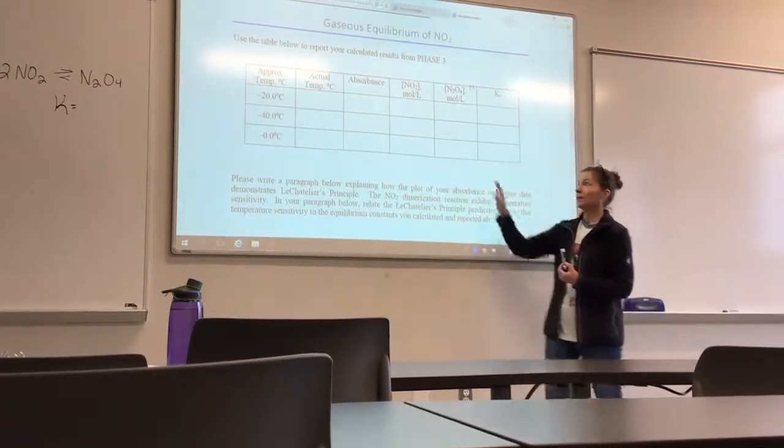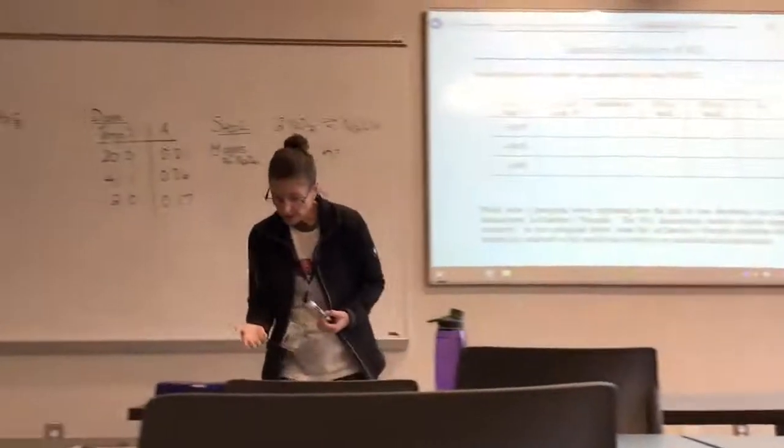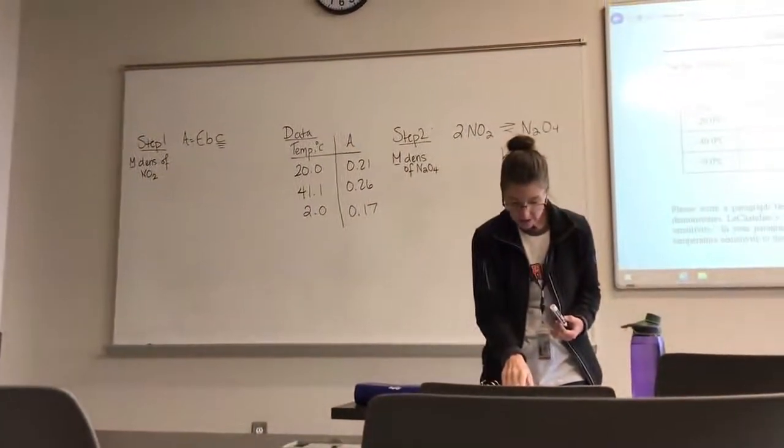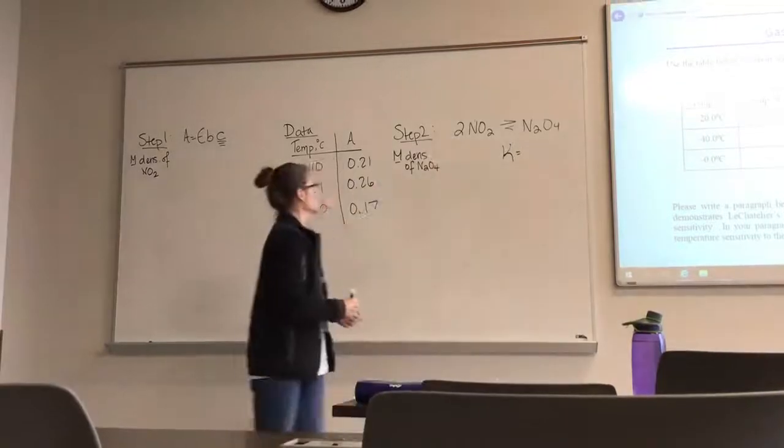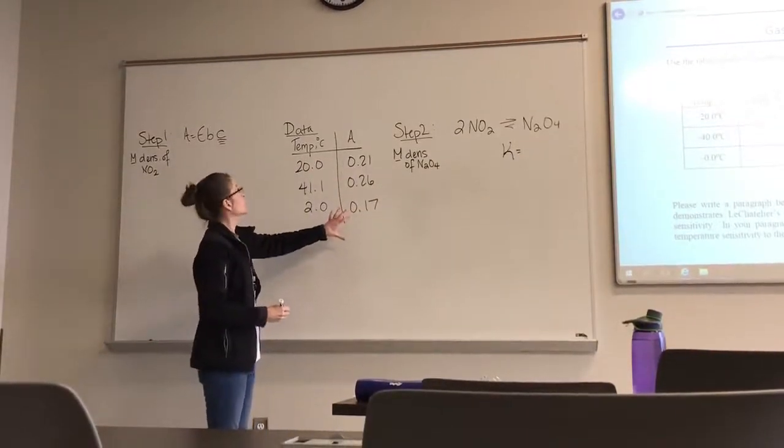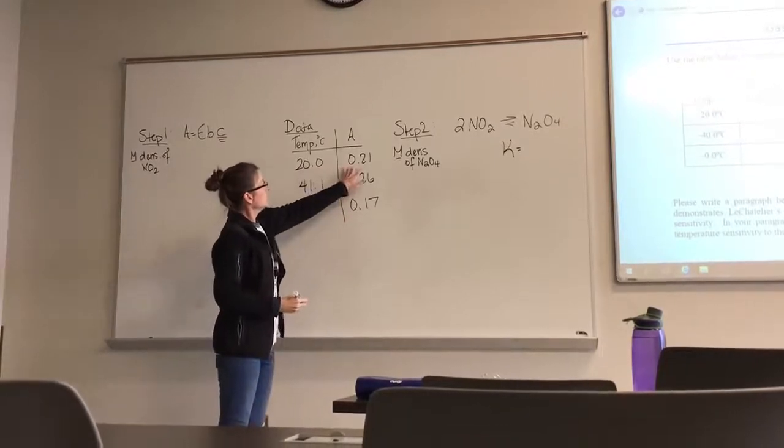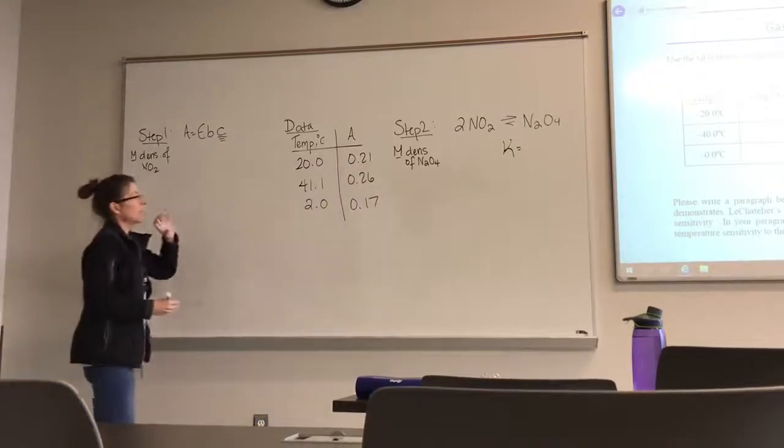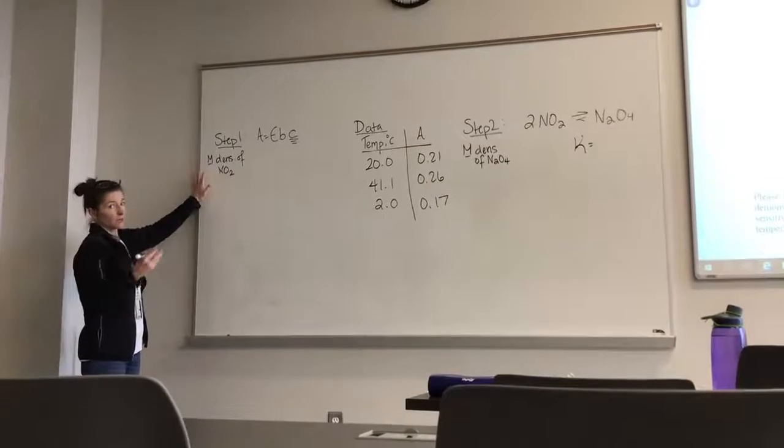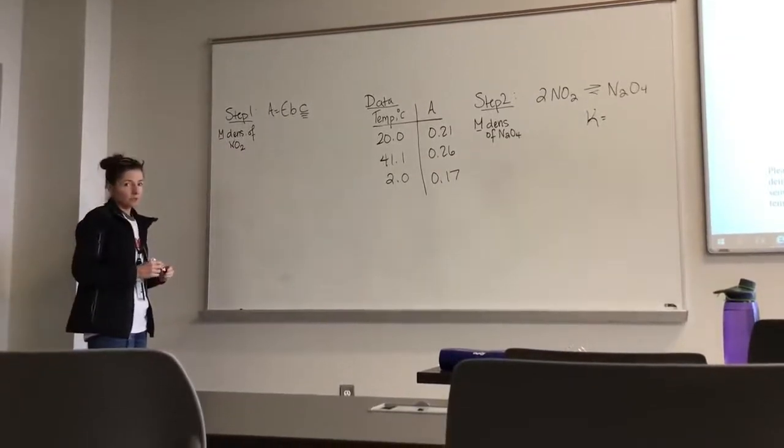So let's talk about the actual lab calculations. In your lab, it actually tells you, I believe in step 15, calculate the molar density of NO2 at approximately room temperature. So I have some data that I took. We generated the NO2, and this is data that was taken. So at 20 degrees, the absorbance based on NO2 was 0.21. I'm going to use that data to do step one, or number 15 in your lab protocol, and it says find the molar density of NO2.